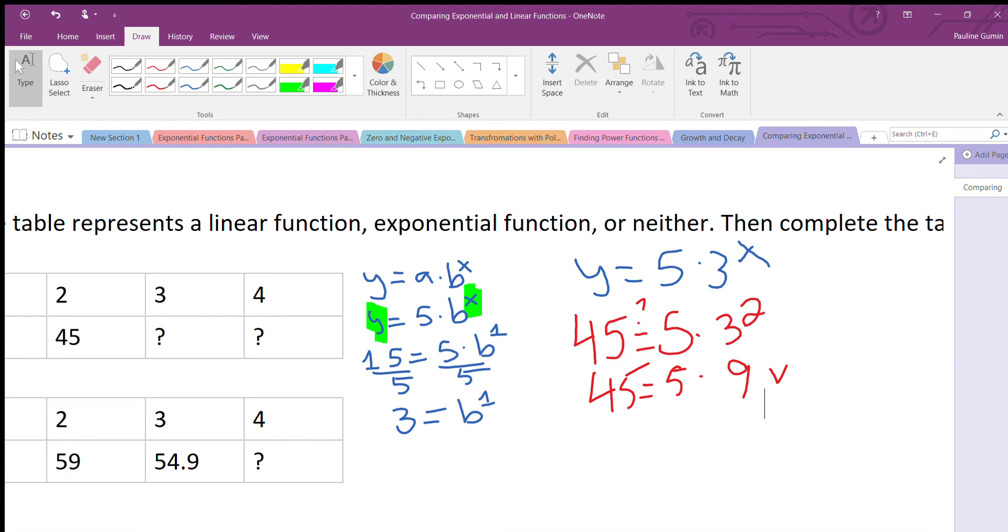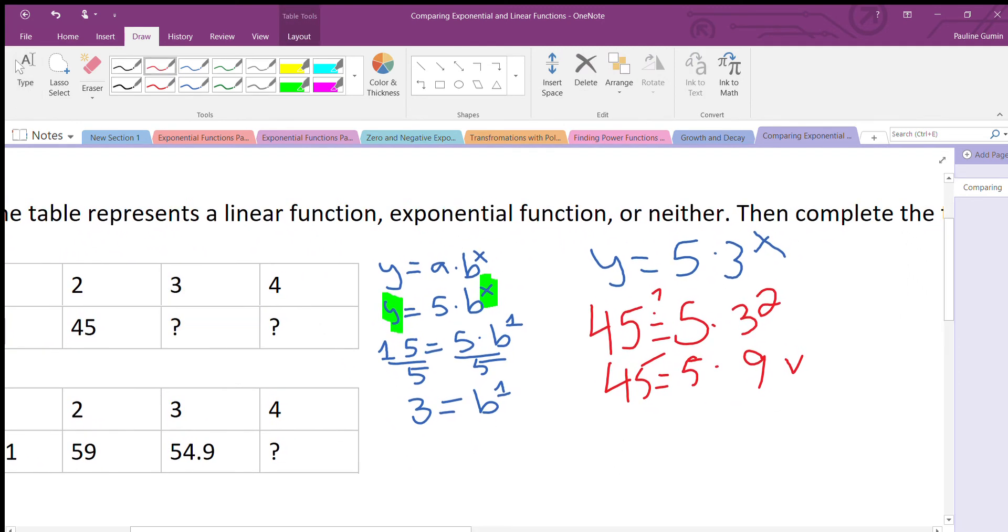That means we could fill these two in. So let's do it. First I'd like to solve 3. So 5 times 3 to the power of 3. 3 to the power of 3 is 27, which gives us an answer of 135. And I'm writing that in the table.